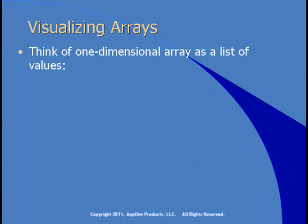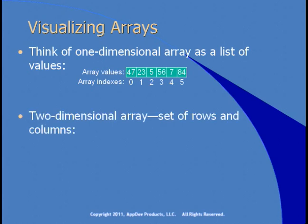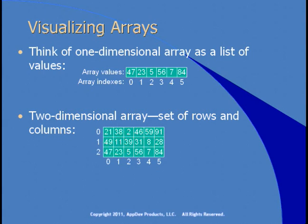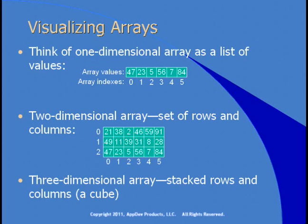You can think of a one-dimensional array as a list of values — array values with a bunch of random numbers and array indexes 0, 1, 2, 3, 4, 5, and so on. You can have a two-dimensional array — a set of rows and columns — with rows numbered 0, 1, and 2, and columns numbered 0 through 5, giving 18 values. You could think of a three-dimensional array as stacked rows and columns, like a cube. No one uses arrays with more than three dimensions for the most part, because it's difficult to visualize. You want a 17-dimensional array? Feel free — it's just that no one will be able to read your code and understand it.